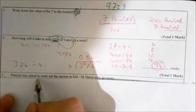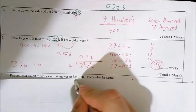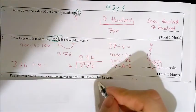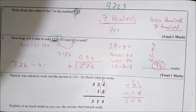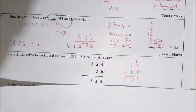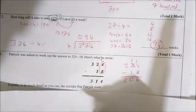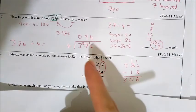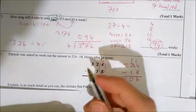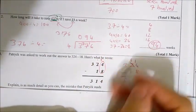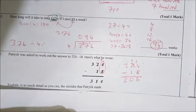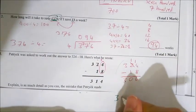Third question: Patrick was asked to work out the answer to 324 subtract 18. Here's what he wrote. Explain in as much detail as you can the mistake that Patrick made. Firstly, if you're uncertain what to do and how to explain where he's gone wrong, just do the question yourself. So like I've done here, I'm just going to do the subtraction question to see where he's gone wrong.